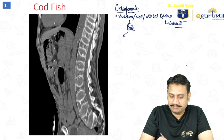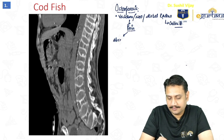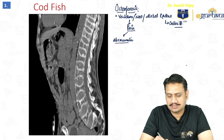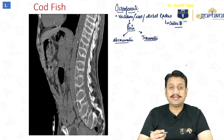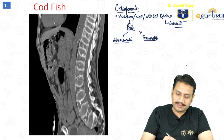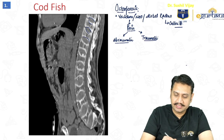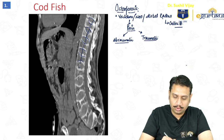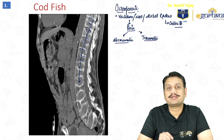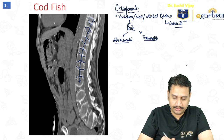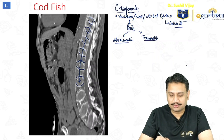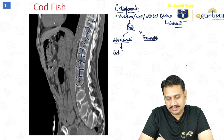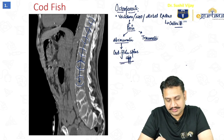The most common presentation we see in osteoporosis patients is pain — either atraumatic pain, where the patient has had pain for a long time without trauma, or traumatic pain. Atraumatic changes in the spine in an old-age lady will be a diffuse kind of change present all through the vertebrae, showing a picture known as the codfish spine appearance.